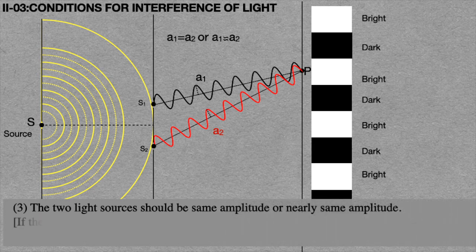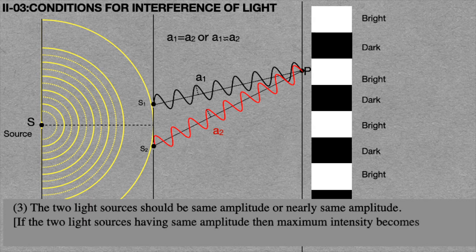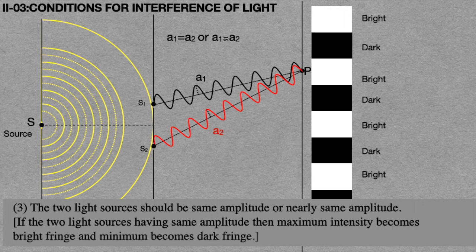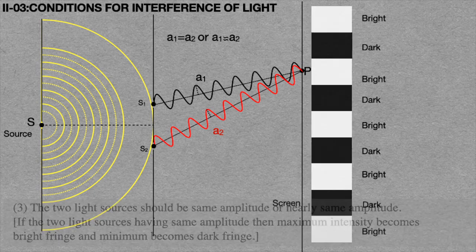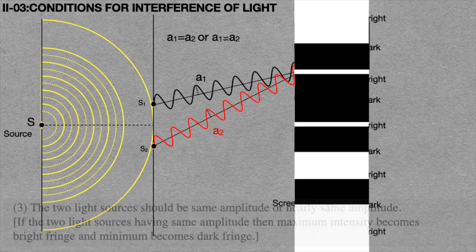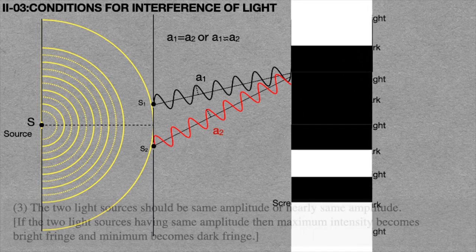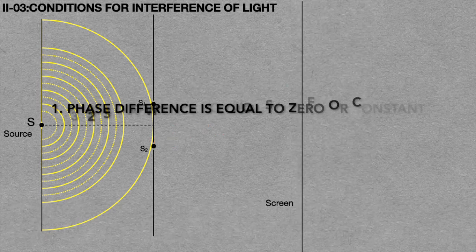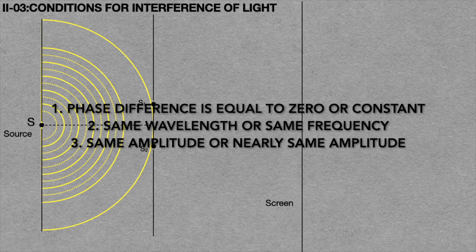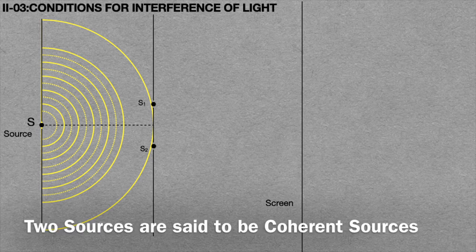If the two light sources have the same amplitude, then maximum intensity becomes a bright fringe and minimum becomes a dark fringe. In case the two sources do not have the same or nearly same amplitude, no stable interference pattern is formed on the screen. If these two sources satisfy the above three conditions, then they are said to be coherent.